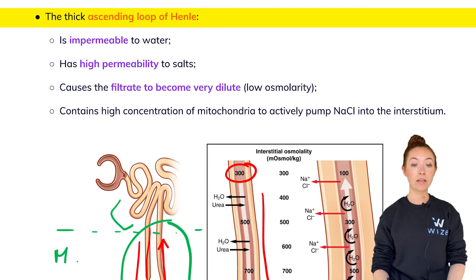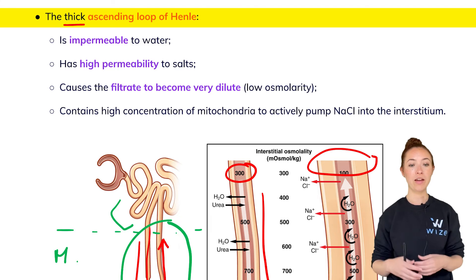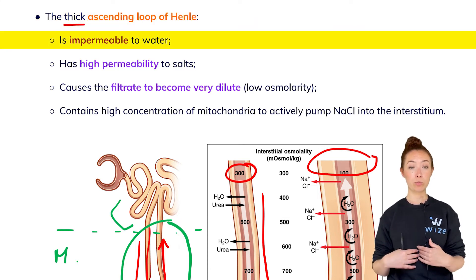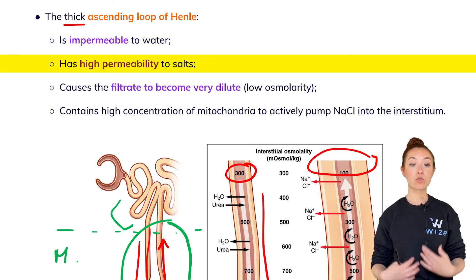The ascending loop of Henle, also called the thick ascending loop of Henle because it's much beefier and thicker, is actually impermeable to water. It's not able to absorb any water at all.